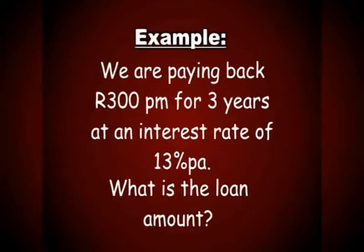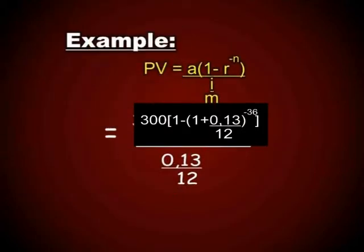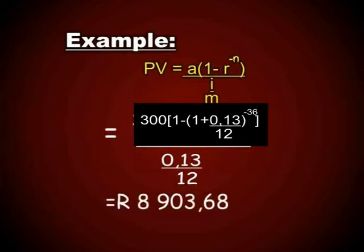Let us use an example to illustrate. We are paying back 300 Rand a month for 3 years at an interest rate of 13% per annum. What is our loan amount? Present Value = 300 × (1 − (1 + 0.13/12)^(−36)) / (0.13/12). It's divided by 12 because there are 12 payments a year, and 3 years × 12 = 36 periods. This gives a present value of 8,903 Rand and 68 cents.